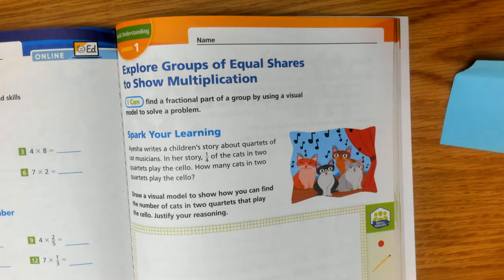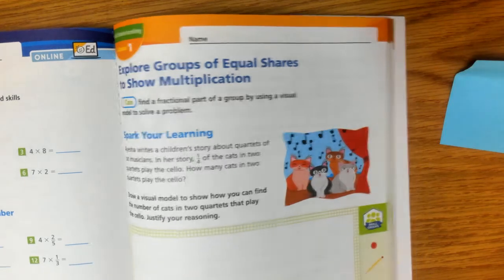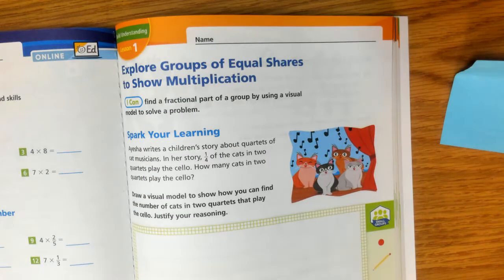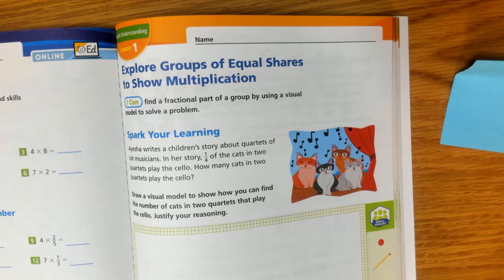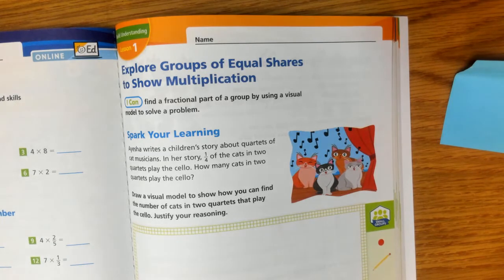Hi 5th graders! We're going to be starting a new module, Module 8, Lesson 1. We start on page 181. We're going to begin by exploring groups of equal shares to show multiplication. You're going to be able to find the fractional part of a group by using a visual model to solve a problem.